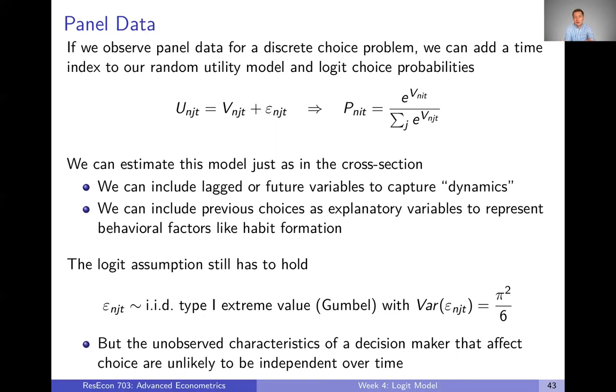Whatever random unobserved component of utility a given decision maker gets from an alternative in this time period, it's unlikely that that's going to be independent from the next time period. You might like a certain cereal, so you always buy that at the grocery store. You're not getting new independent random draws of utility every time you go. So if that unobserved random component of utility is not independent over time, then a simple logit model might not be how we want to estimate a panel data set of choices.